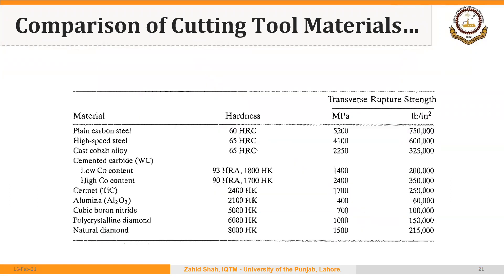Here we have some numerical values to go through. Moving from HSS to carbide, ceramics, CBN, and diamond, hardness gradually increases from 60–65 HRC to even higher values. Contrary to that, the transverse rupture strength — or toughness — reduces as we move down. HSS has a range of about 4,100 MPa, while for diamond and CBN it is around 1,000 MPa.